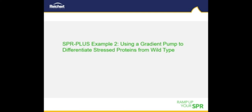In example two, we employ a gradient elution to separate good antibody from antibody degraded by oxidation with peroxide. We use this example to show how the structural integrity of humanized IgG1-class monoclonal antibodies of therapeutic interest can be differentiated using SPR+.